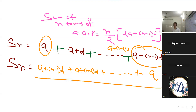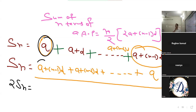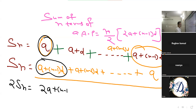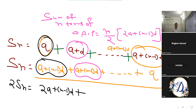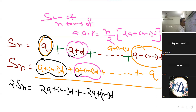अब एक बार SN सीधा लिखा है, एक बार SN उल्टा लिखा है। SN plus SN किया तो क्या है? 2SN — twice of sum of N terms। इसकी पहली term A है और इसकी पहली term A plus N minus 1 into D है। दोनों को add करेंगे — A plus A = 2A। दूसरी term A plus D और A plus N minus 2 into D को add करो — surprisingly same आएगा। Last terms A plus A = 2A, plus N minus 1 into D।